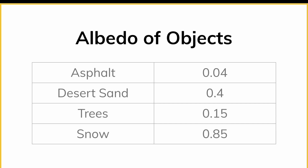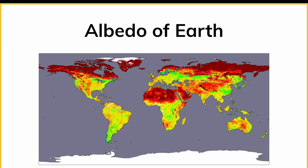Some common objects have albedos listed here. As you can see, asphalt — the stuff that makes roads — has a really low albedo; it absorbs a lot of energy, that's why it gets so hot. Whereas whiter objects like snow and ice tend to reflect a lot of the energy and don't absorb as much. This NASA map approximates the albedo of different land areas of Earth, excluding water. Areas with a lot of snow, ice, or sand reflect a lot of that energy, while green areas tend to absorb more.